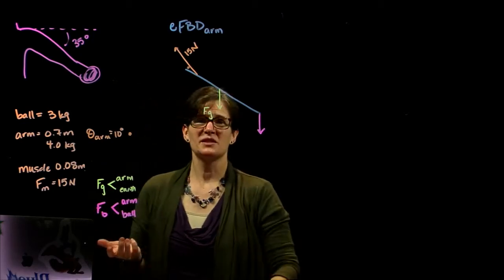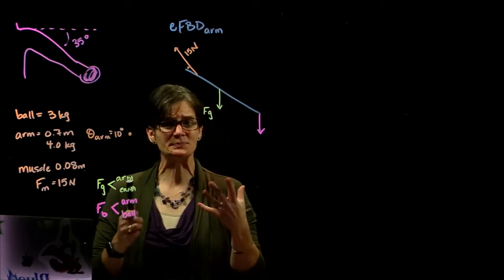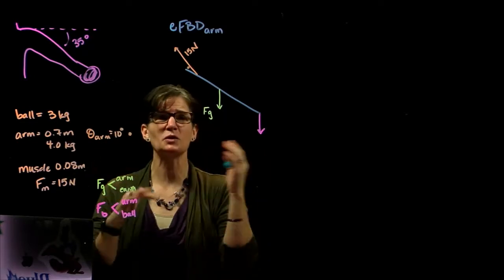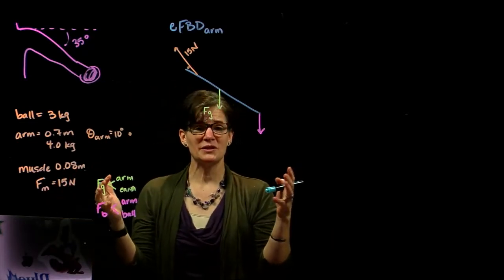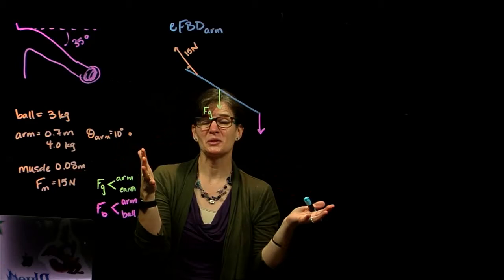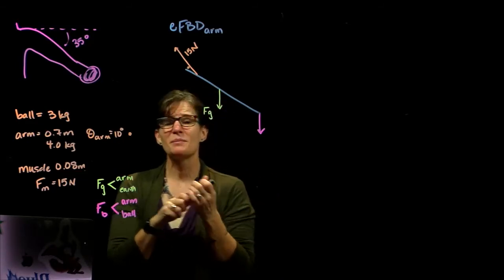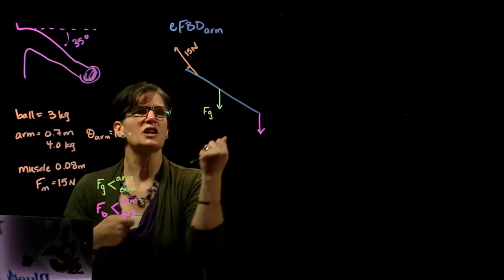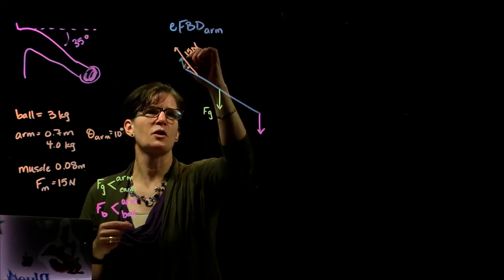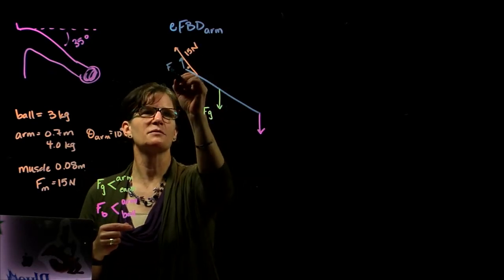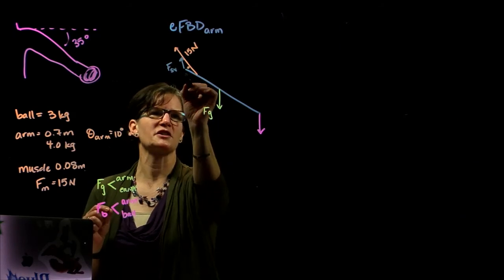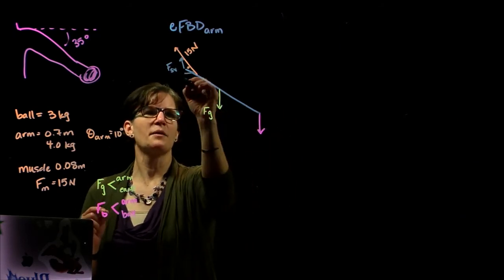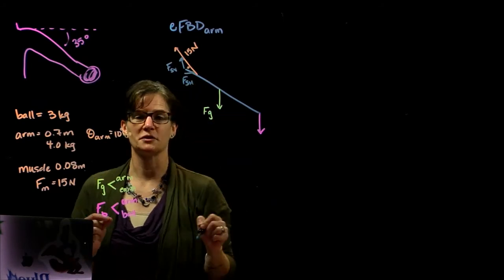And then the arm is also interacting with the shoulder joint. And this is that situation where we don't exactly know the direction this shoulder joint is acting on the arm. But we could say there's a horizontal and a vertical component of that direction, and we might make a guess at it. If we're wrong, the physics will tell us. So I would say that the shoulder joint is sort of holding the arm up. So here's the force of the shoulder in the vertical direction, and preventing it from being pulled that way. So the force of the shoulder in the horizontal direction.